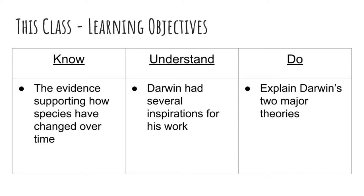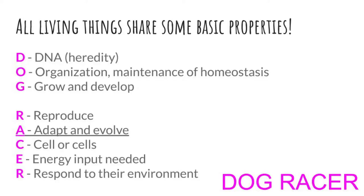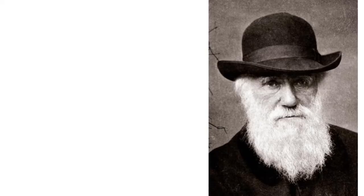At the end of this lesson, you'll understand Darwin's inspirations and who he was talking to at the time of his discoveries. You'll be able to explain Darwin's two major theories — of course, we're talking about adapting and evolving, the 'A' part of the DOGR framework.